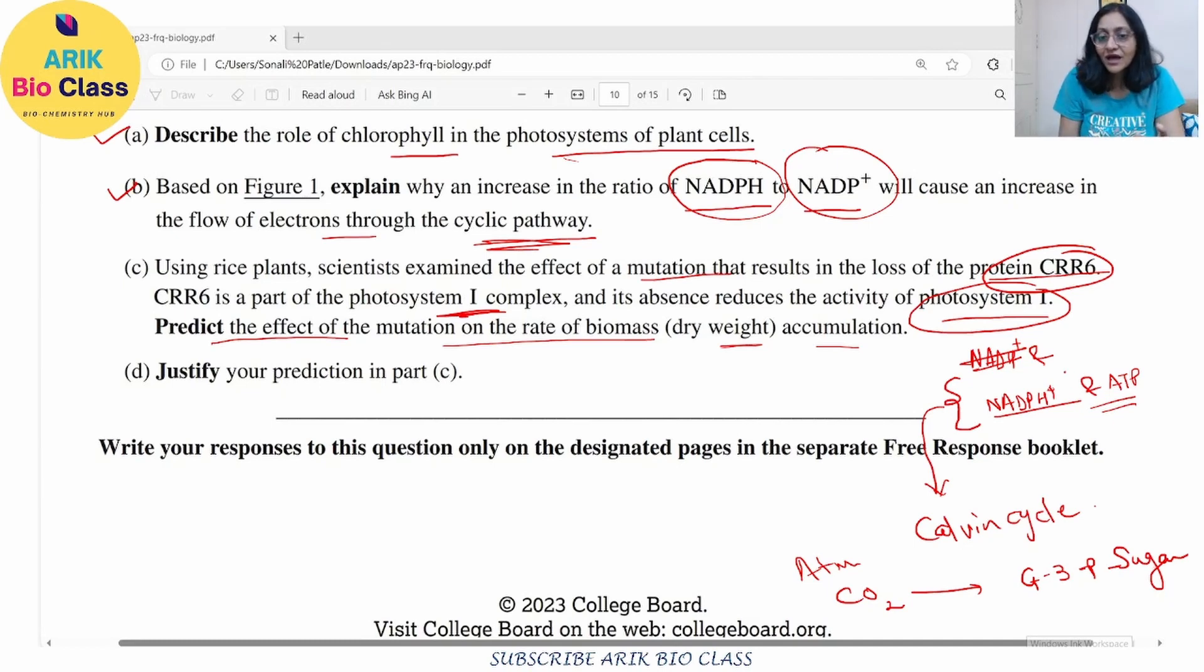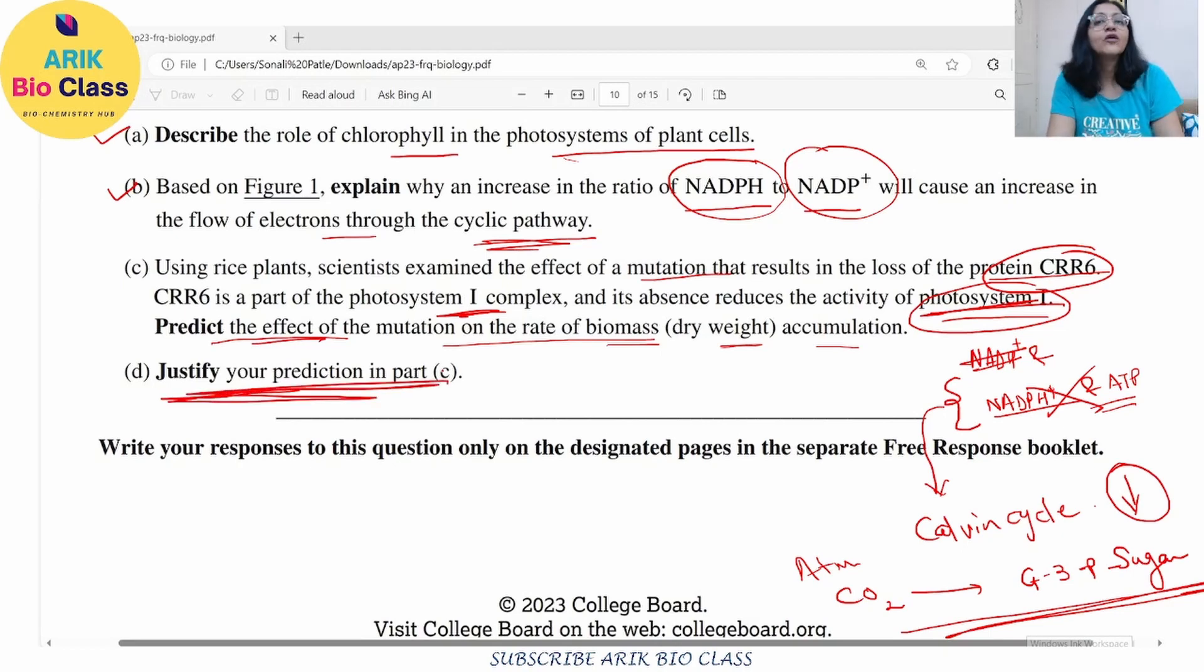So now, since these are less because of inefficient photosystem I, so their inflow to the Calvin cycle will also be minimized, reduced. As a result, this accumulation, this conversion of carbon dioxide to sugar will also get affected. So that's the impact and that is the prediction or that is the reason behind that.